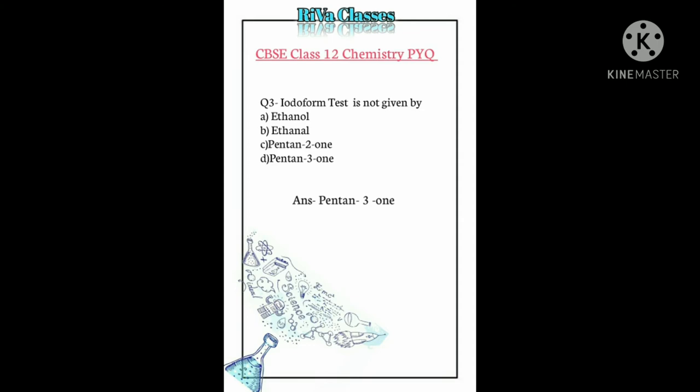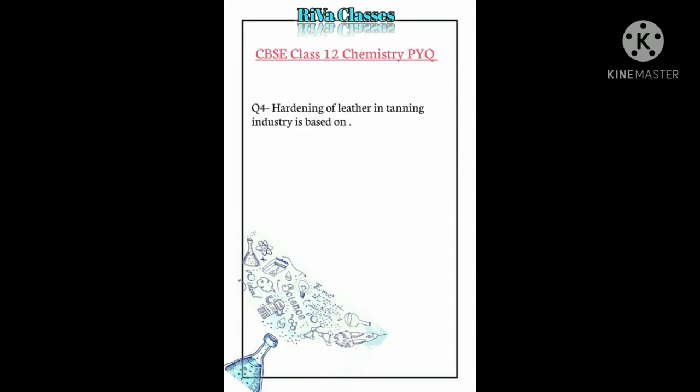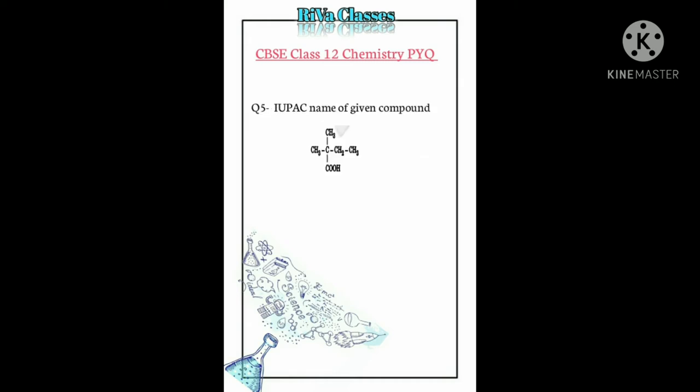Question number four: Hardening of leather in tanning industries is based on what? Answer: Mutual coagulation. When positively charged particles and negatively charged particles mix, coagulation leads to the hardening of leather in tanning industries. This is due to mutual coagulation of charge.